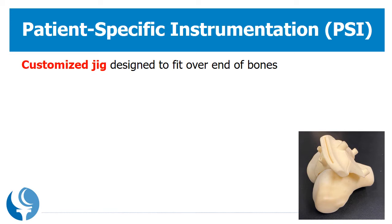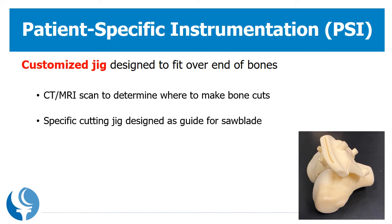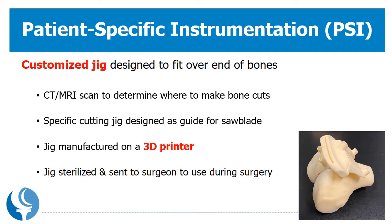Another device a surgeon may use is patient-specific instrumentation. These are customized cutting jigs designed and built to fit over the ends of the bone during surgery. First, a CT or MRI scan is analyzed to determine where to make the bone cuts. Next, a patient-specific cutting jig is designed as a guide for the saw blade, manufactured on a large 3D printer, then sterilized and sent to the surgeon. The picture demonstrates a customized cutting jig designed to fit exactly over the end of the patient's thigh bone, with the green highlight identifying the slot where the saw blade is placed to perform the bone cut.